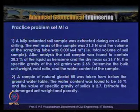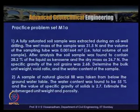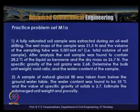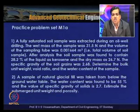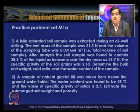The first problem: a fully saturated soil sample was extracted during an oil well drilling (offshore investigation). The wet mass of the sample was 31.5 N, the volume of the sampling tube was 0.001664 m³. Analysis found the sample contained 28.2% liquid as kerosene and the dry mass was 26.7 N. The specific gravity of soil grains was 2.68. Determine the bulk unit weight, void ratio, and water content.